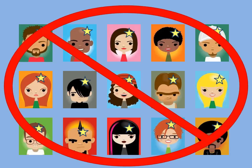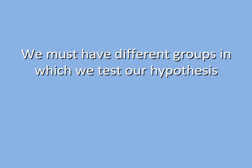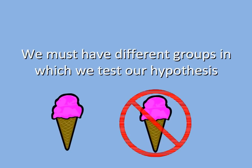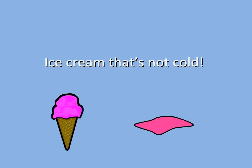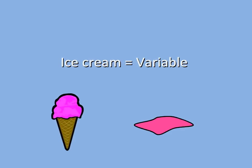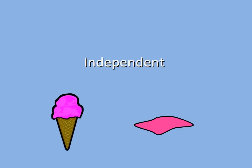So what do we do? We need more groups of people to test to make sure it is the temperature, not just something else about the ice cream that causes headaches. We can't use only regular ice cream. We can also use melted ice cream. If the only thing different is the temperature, then only those who eat the frozen ice cream should get the headache. Our ice cream is a variable in our experiment because it can be changed, and it is specifically called the independent variable, as we are directly altering this variable — frozen or melted ice cream.